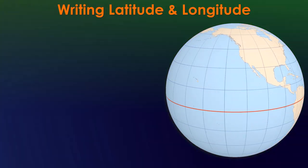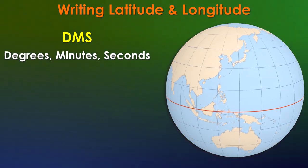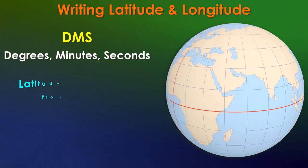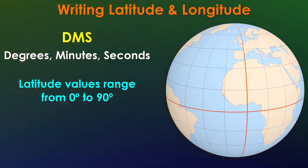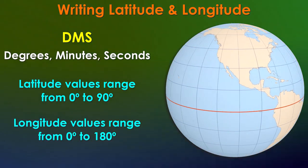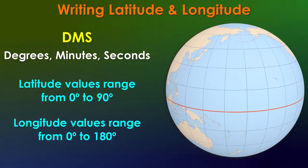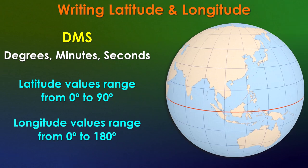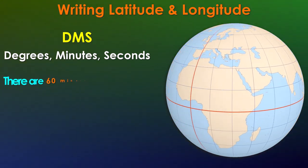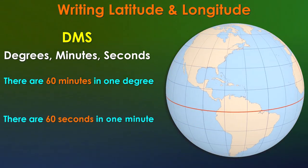The first we refer to as DMS, which stands for degrees, minutes, and seconds. You'll recall from an earlier video that latitude ranges from 0 degrees to 90 degrees at each pole, and longitude ranges from 0 degrees at the prime meridian to 180 degrees on the opposite side of the planet. When measuring in degrees, you need to also understand the subdivisions of a degree. There are 60 minutes in one degree, and there are 60 seconds in one minute.